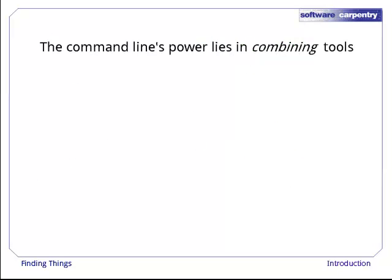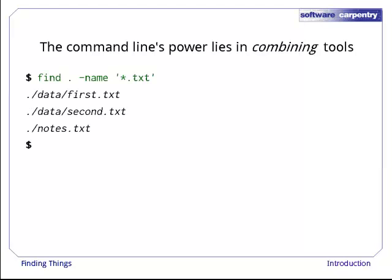As we said in previous episodes, the command line's power lies in combining tools. We've seen how to do that with pipes. Let's look at another technique. As we just saw, find . -name '*.txt' in quotes gives us a list of all text files in or below the current directory.